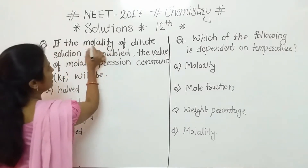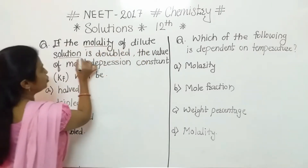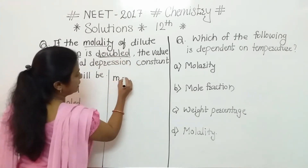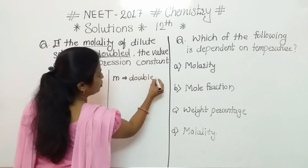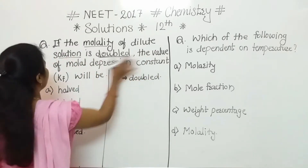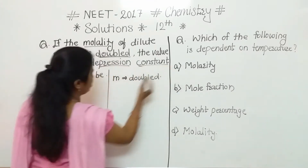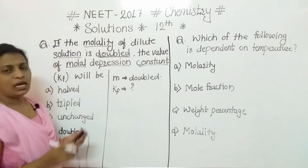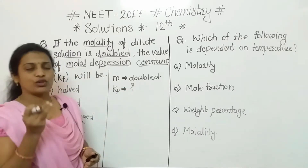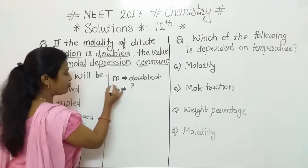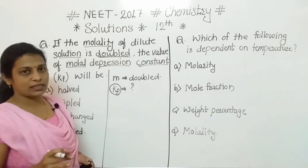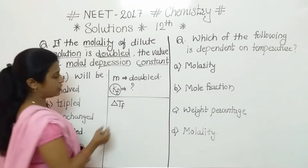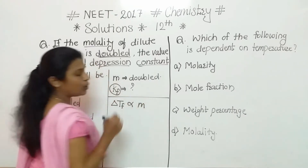First question: if the molality of a dilute solution is doubled — that is, the concentration of the solution is doubled — what will be the value of the molal depression constant, denoted by the symbol KF? We have to consider that delta Tf, that is the depression in freezing point, is directly proportional to the molality.